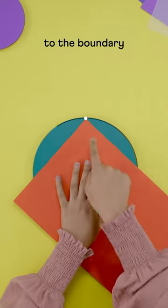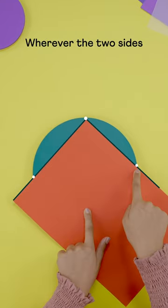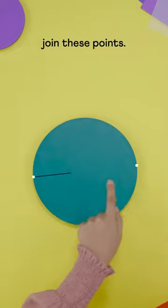Align one of its corners to the boundary of the circle. Wherever the two sides intersect the circle, join these points.